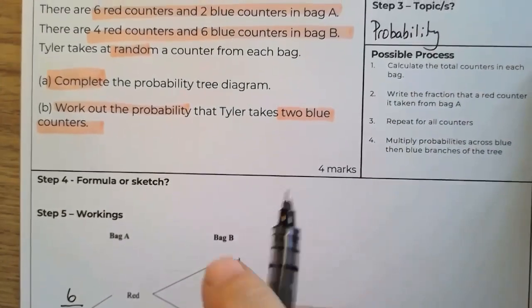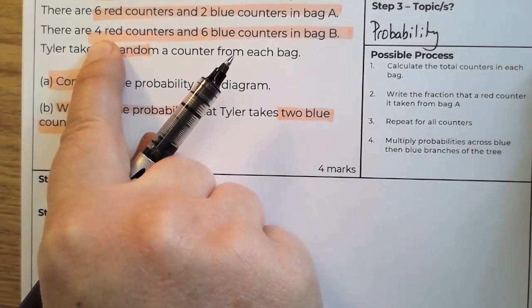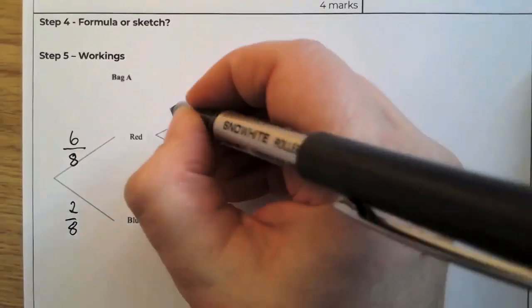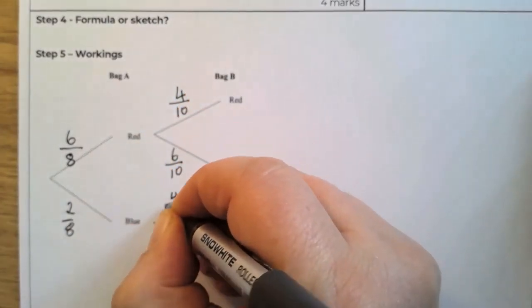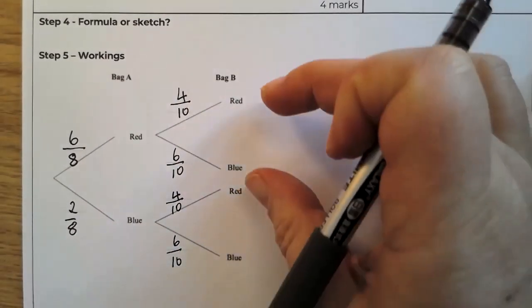Bag B, we've got four counters and six counters. So four red counters out of a possibility of 10. So we have four out of 10, and six out of 10 for blue.